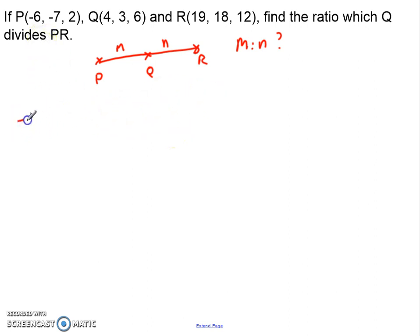So, for P in the X direction, we go from negative 6 to 19. That's a journey of 25. In the Y direction, it's negative 7 all the way up to 18. Again, that's a journey of 25. And in the Z direction, we start at 2, and we go all the way to 12. That's a journey of 10.